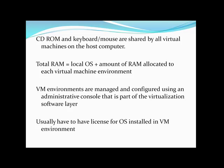The host computer's CD-ROM, keyboard, and mouse are all shared by the virtual machines on that host computer. The host computer's total RAM is the local operating system plus the amount of RAM allocated to each virtual machine environment. So if your computer has 4 gigs of RAM and you allocate 3 gigs to your virtual machine, that means your host computer only has 1 gig of RAM left. Therefore, the amount of RAM on your computer is one of the deciding factors about how well virtual machines will run.